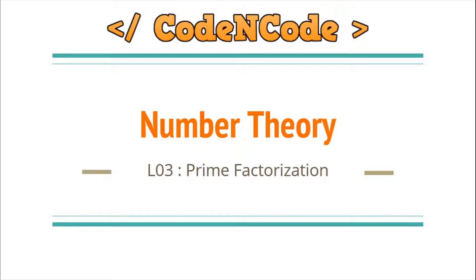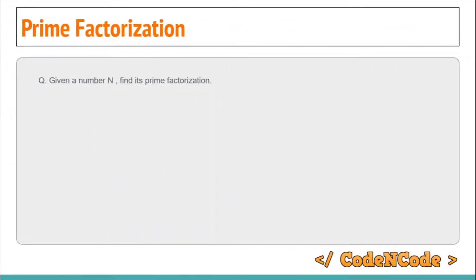Hello guys, this is lecture 3 from the number theory series. In this lecture we are going to talk about prime factorization. Prime factorization means you are given a number n and you have to find its prime factors. For example, if the number is 100, you print 2,2 and 5,2 — meaning 2 raised to power 2 and 5 raised to power 2.